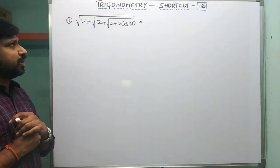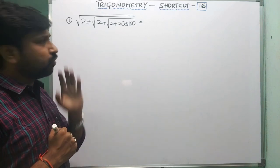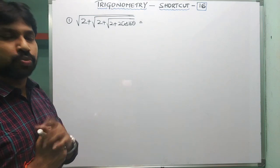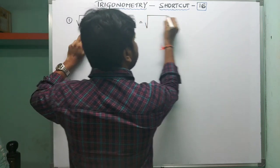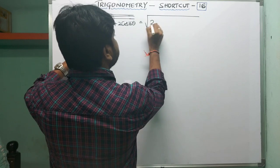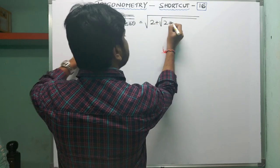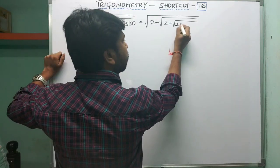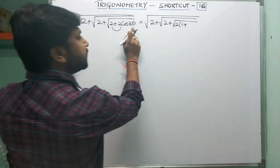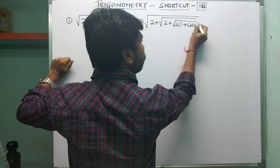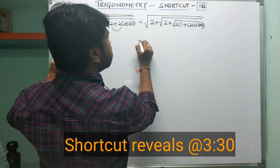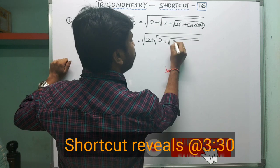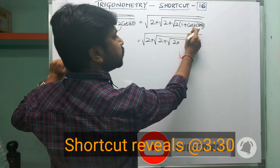Look carefully. The question is: square root of 2 plus square root of 2 plus square root of 2 plus 2cos(16θ). This can be written as square root of 2 plus square root of 2 plus square root of, taking 2 as common, into 1 plus cos(16θ). Now cos(16θ) can be written as cos(2×8θ), giving us square root of 2 plus square root of 2 plus square root of 2 into (1 + cos(2×8θ)).